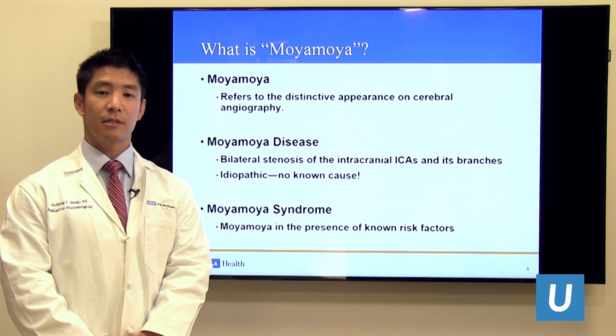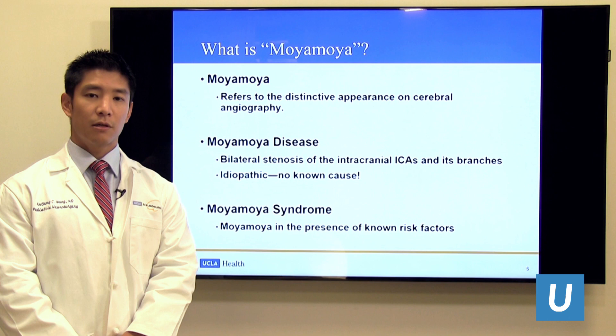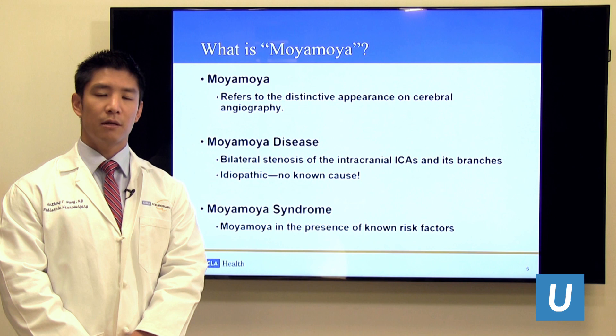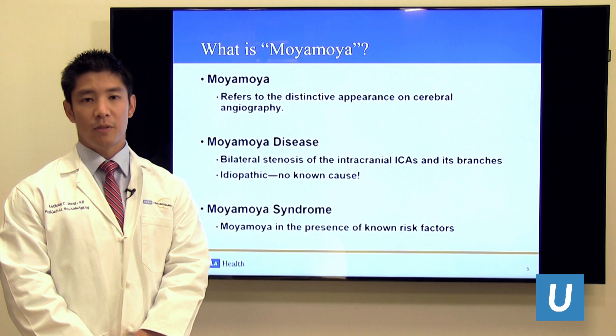We use the term Moyamoya disease to describe a specific condition where Moyamoya occurs on both sides of the brain in a progressive fashion and there's no underlying cause that we can find. We use the term Moyamoya syndrome to describe when the same thing occurs but there is an underlying cause — some of the more common ones being sickle cell disease, trisomy 21, and previous cranial irradiation.